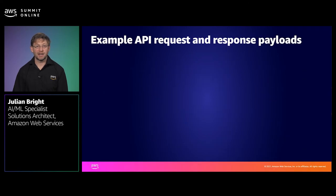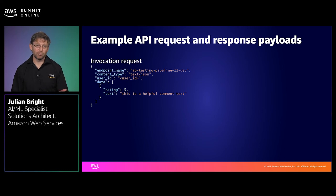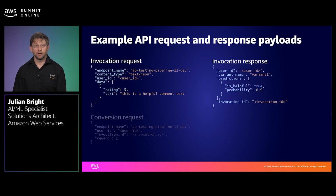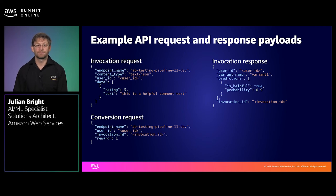Before we jump into a demo, let's look at the request and response payloads for the invocation and conversion endpoints. The invocation request contains the name of the endpoint, the content type, a user identifier, and the data we want to pass to the SageMaker endpoint — in this case, the review text. The response tells us the endpoint variant assigned to a particular variant name, along with the predictions returned and a unique invocation ID for that request. For the conversion request, we don't require any additional data — just the user ID and original invocation ID, along with an optional reward which, if not provided, is set to 1. You receive a response once the conversion event is logged.